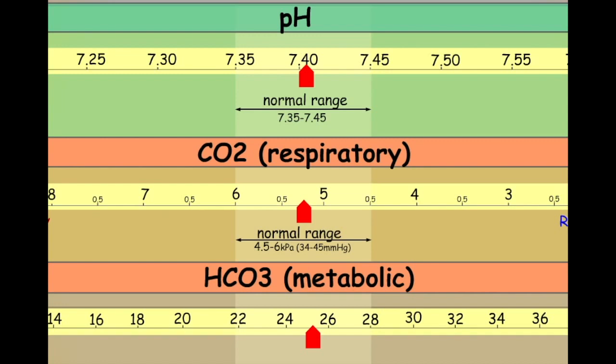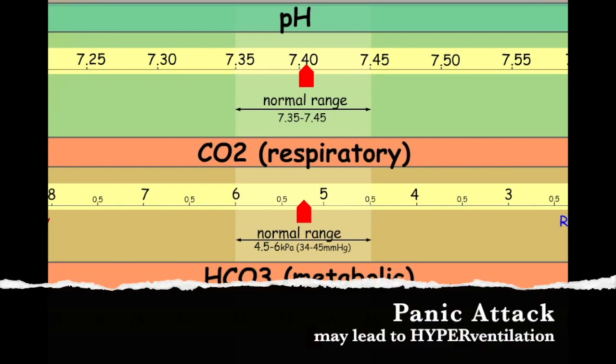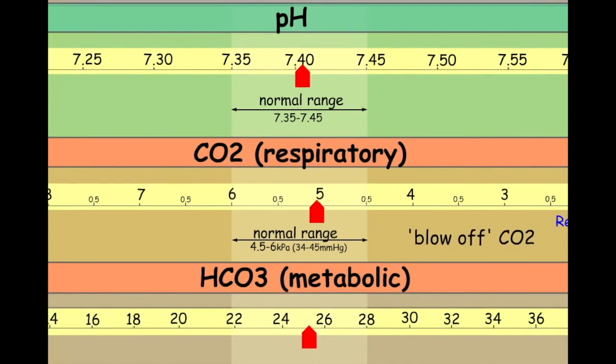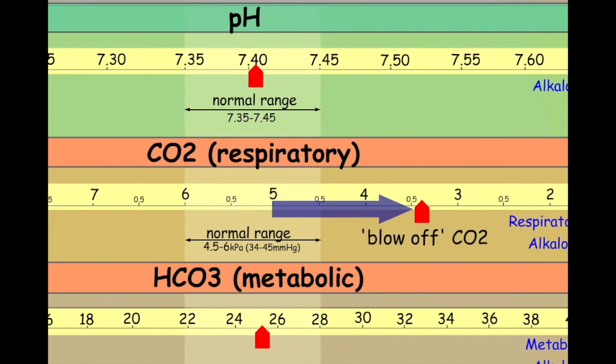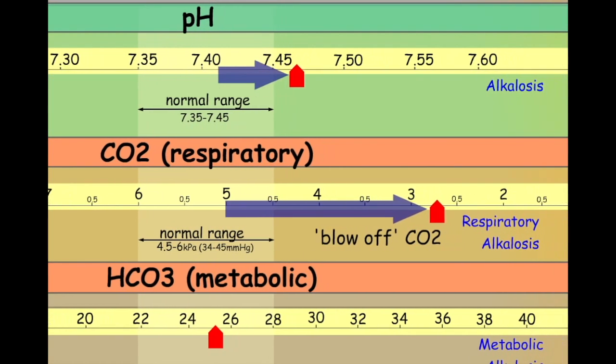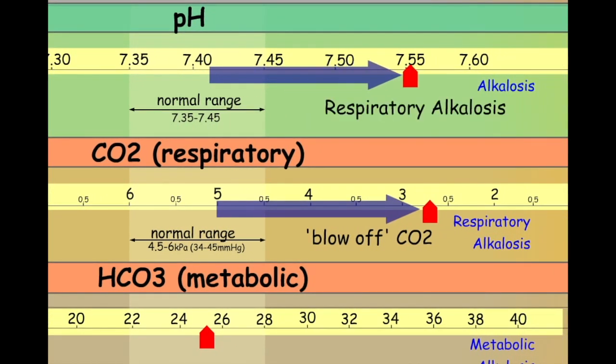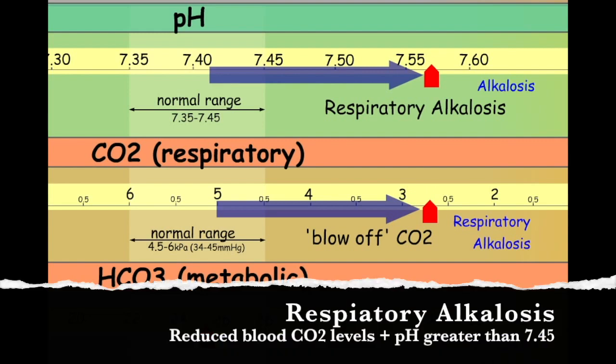For example, a patient suffering from chest pain may begin to panic. They could in fact begin to have a panic attack which will cause them to hyperventilate. Hyperventilation will cause them to blow off more CO2. A low CO2 will drive their pH in an alkalotic direction. This would be referred to as a respiratory alkalosis.